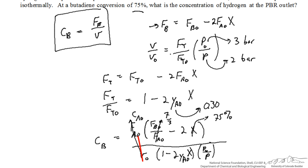We can then realize that this quantity is equal to CA0, and FB0 over FA0 is equal to 7 thirds given the problem statement, which is that we have 30% butadiene and 70% hydrogen. The conversion is 75%, and we've talked about the values for the other parameters.